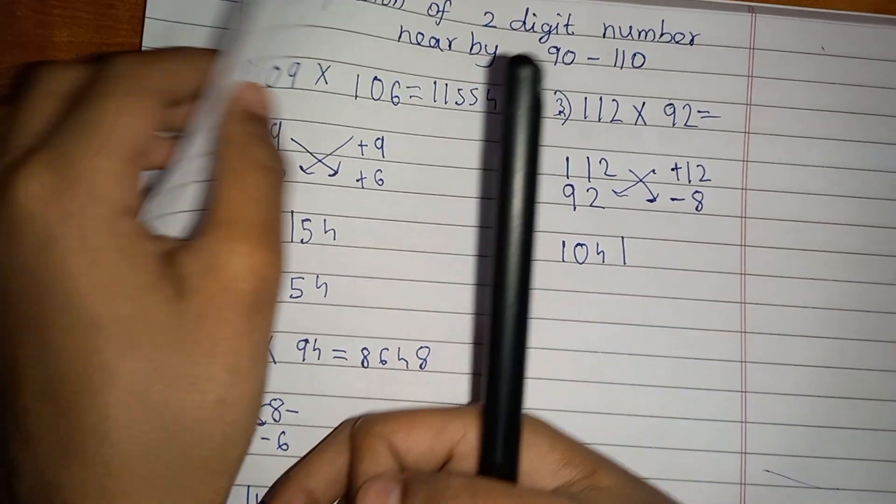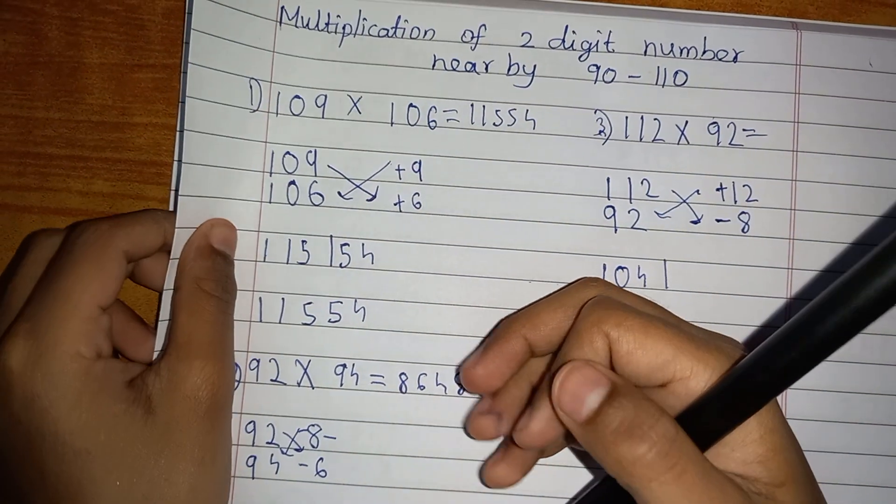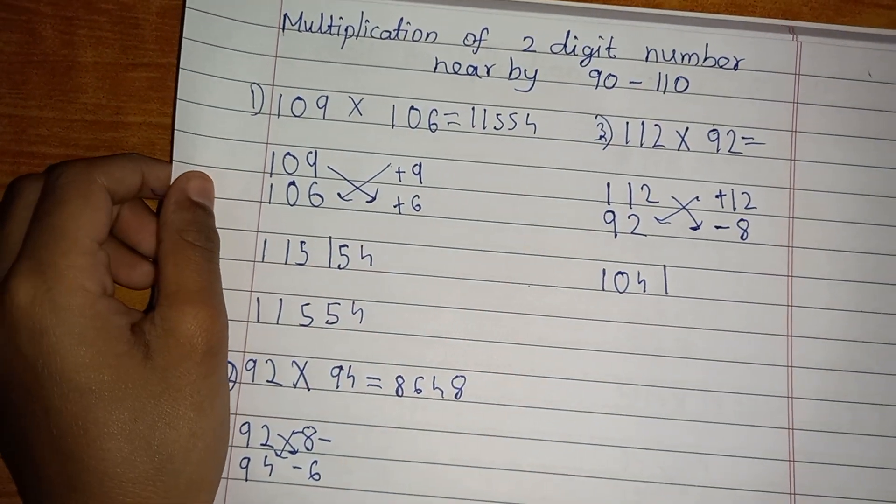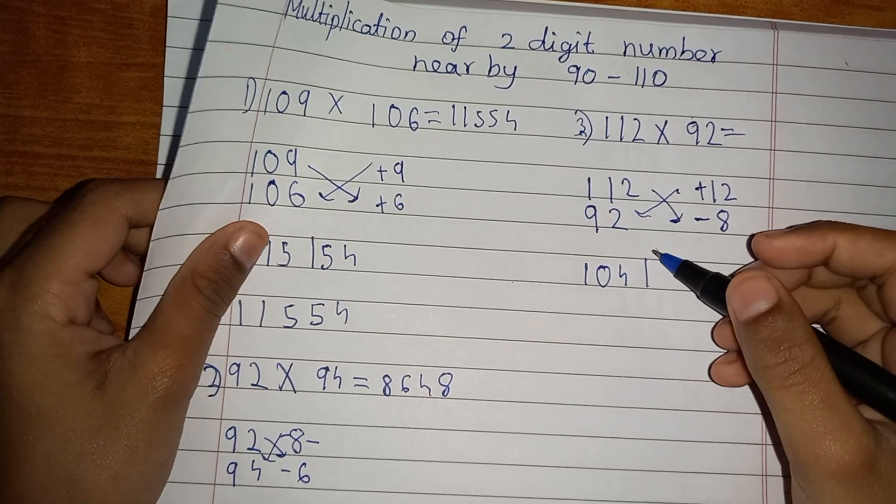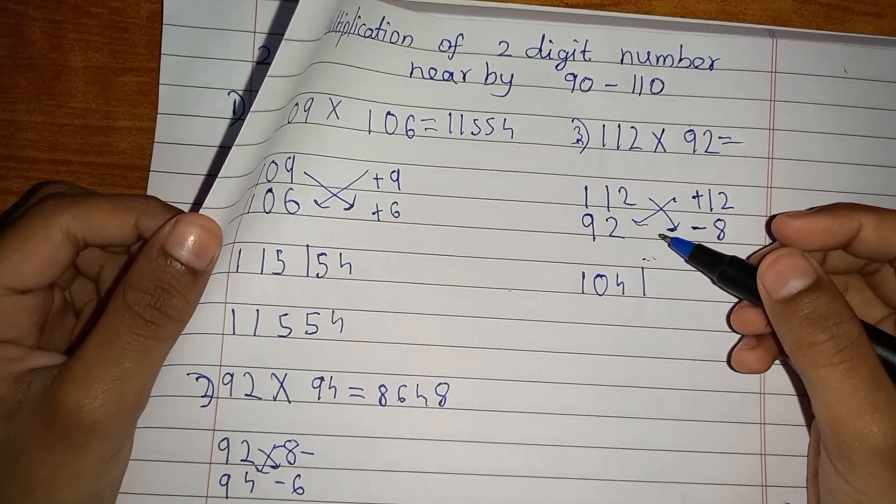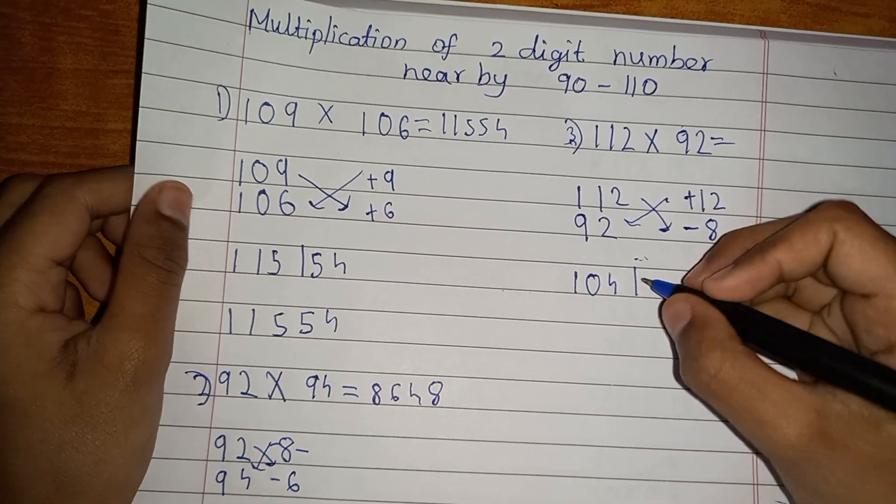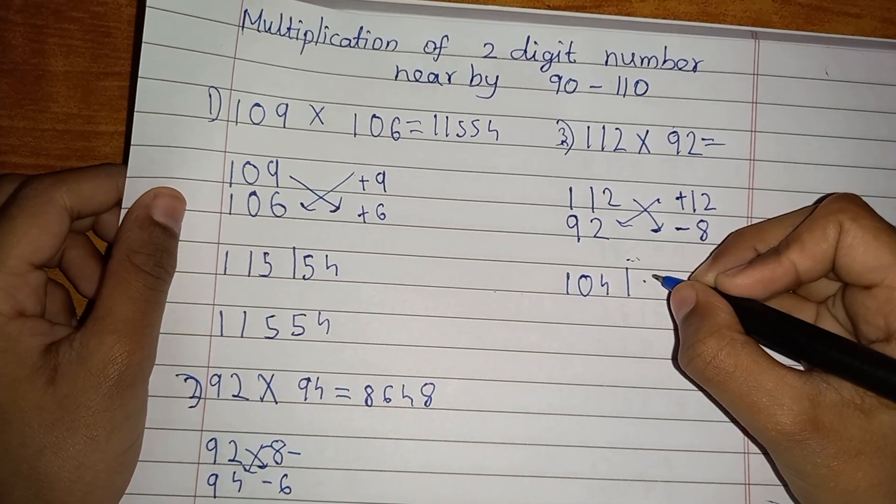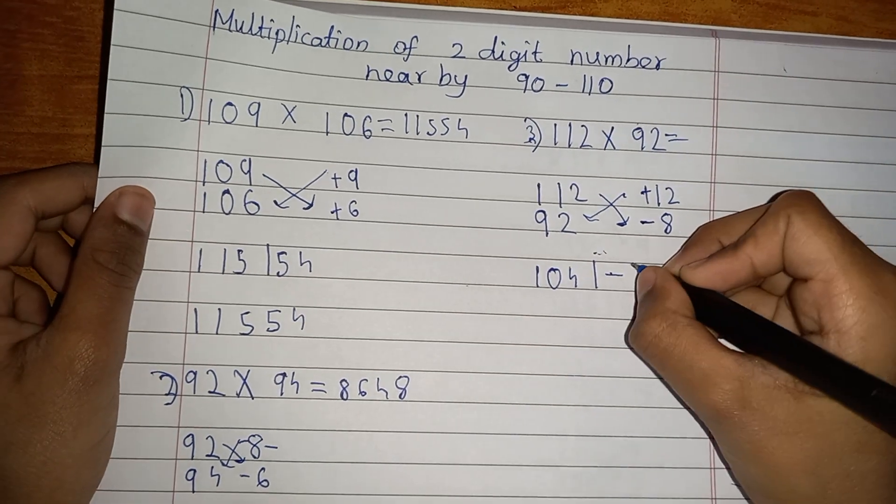So you have to, like, 12 multiplied by minus 8 is minus 96. So I have to write minus 96 here.